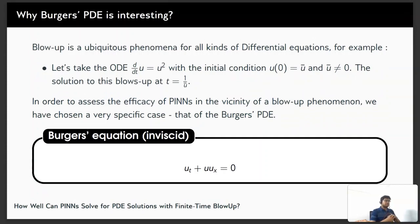Now blow-ups are not a rare phenomenon. For example, if we take the ODE du/dt equals u squared with the initial condition u(0) equal to u bar and u bar not equal to 0, the solution to this blows up at t equal to 1 over u bar.